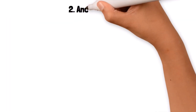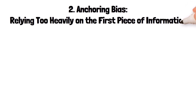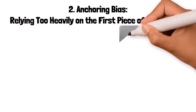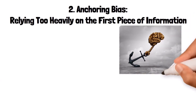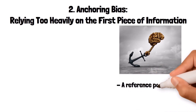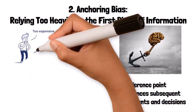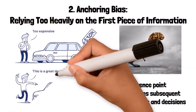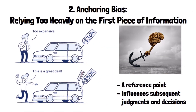2. Anchoring Bias: relying too heavily on the first piece of information. Anchoring bias occurs when people rely too heavily on the first piece of information — the anchor — they receive when making decisions. This initial information sets a reference point that influences subsequent judgments and decisions. For instance, if a car salesperson initially offers a high price for a car, that price becomes an anchor, and any negotiation thereafter is influenced by it, even if the initial price is much higher than the car's actual value.